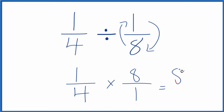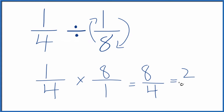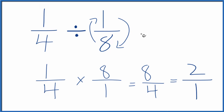1 times 8, that's 8. 4 times 1, that's 4. So we end up with 8/4. And 4 goes into 8 twice, and 4 goes into 4 once. And 2 divided by 1, that is just 2. So 1/4 divided by 1/8 gives us 2.